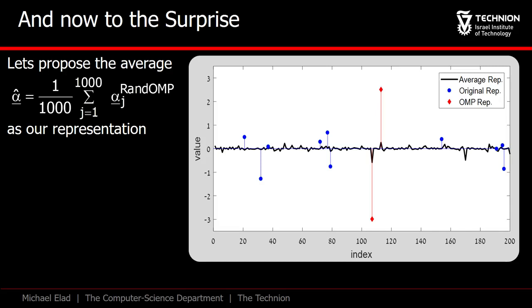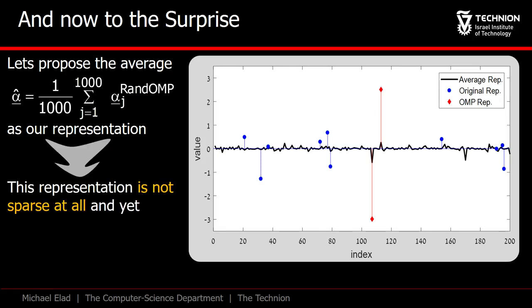In this graph you see in blue the true non-zeros, 10 of them. The OMP solution having only two non-zeros, and the alpha hat in black. This representation is not sparse at all.